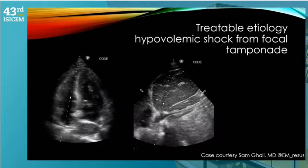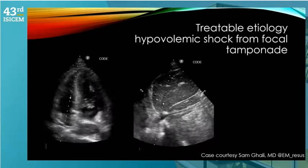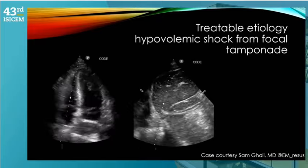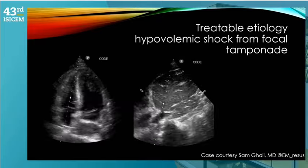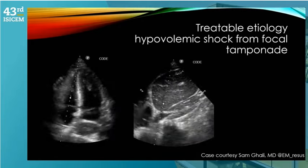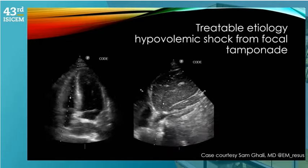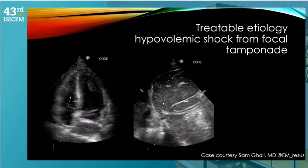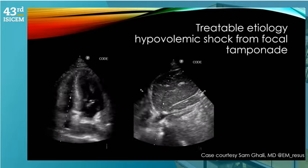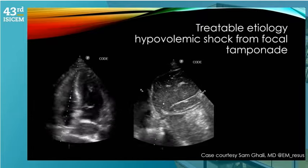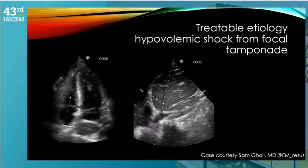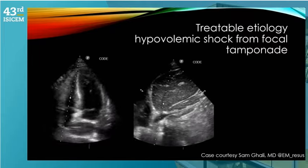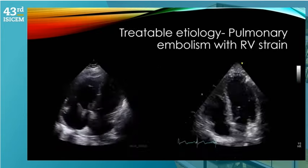The biggest use of ultrasound — if done properly and without delaying CPR — is finding a treatable etiology. In this case, on the right side you can see a collapsed IVC next to the beating heart. On the left side, there is external compression of the left atrium. The left atrium is not getting enough filling, leading to a hypovolemic shock picture, probably from focal tamponade. This is more of a surgical lesion than anything else — a patient that probably needs very emergent directed therapy to treat the cause of shock.